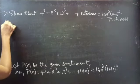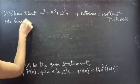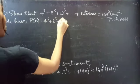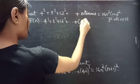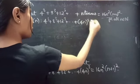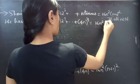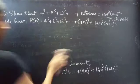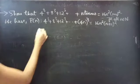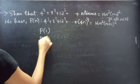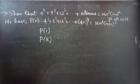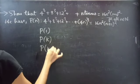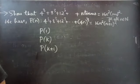Then P(n) is: 4³ + 8³ + 12³ + ... + (4n)³ equals 16n²(n+1)². We will show that the statement is true for n equals 1, and we will assume that the statement is true for n equals some k belonging to the natural numbers, and finally we will prove that the statement is true for n equals k plus 1.